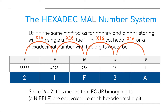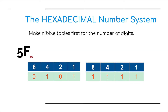Since 16 is 2 to the power of 4, this means that four binary digits — a nibble — are equivalent to one hexadecimal digit. For example, with the two-digit hex number 5F, we can break those two digits into two nibbles. The nibble representing 5 has a value of 4 plus 1. On the right-hand side, F is represented by 8+4+2+1, which is 15. So 5F equals 01011111 in binary.